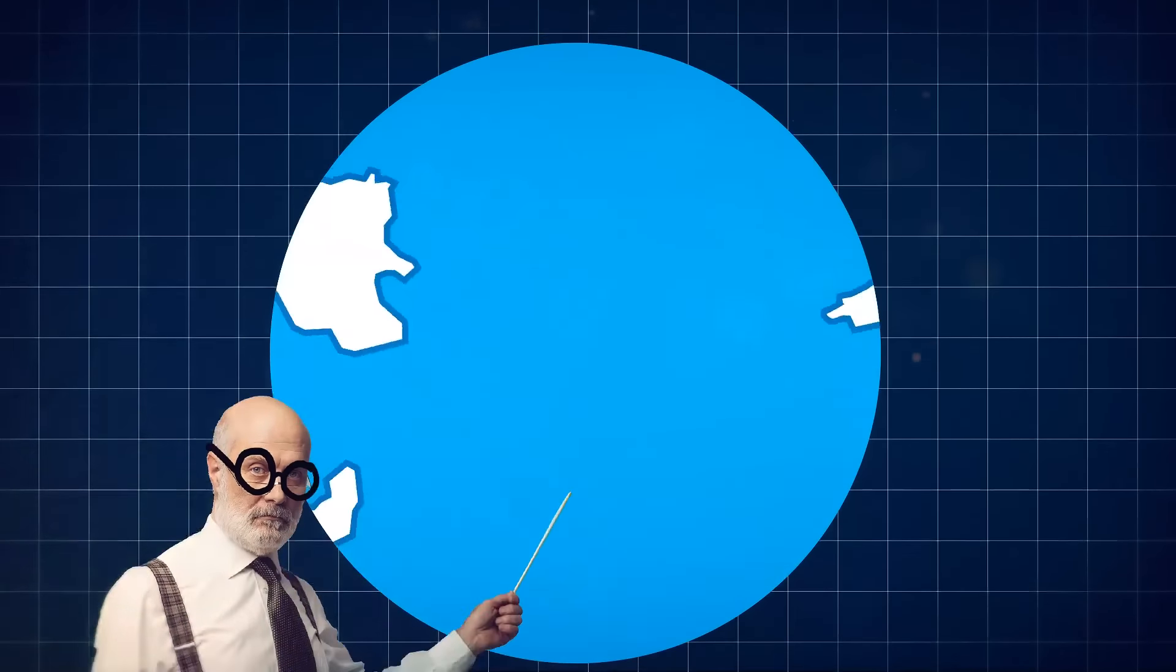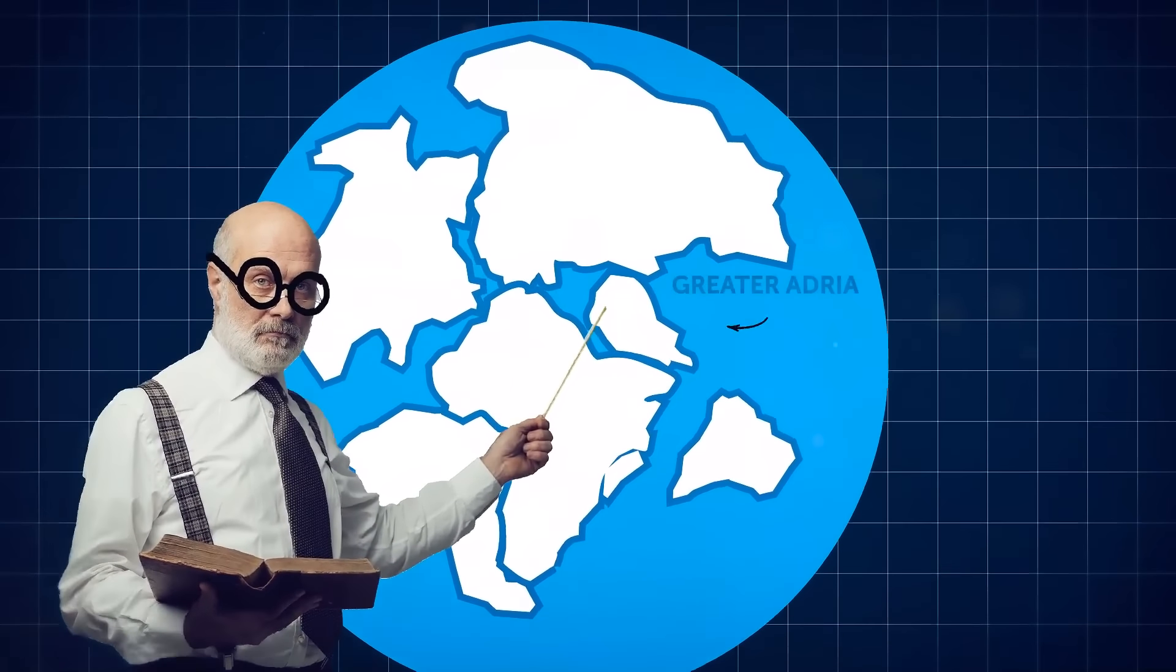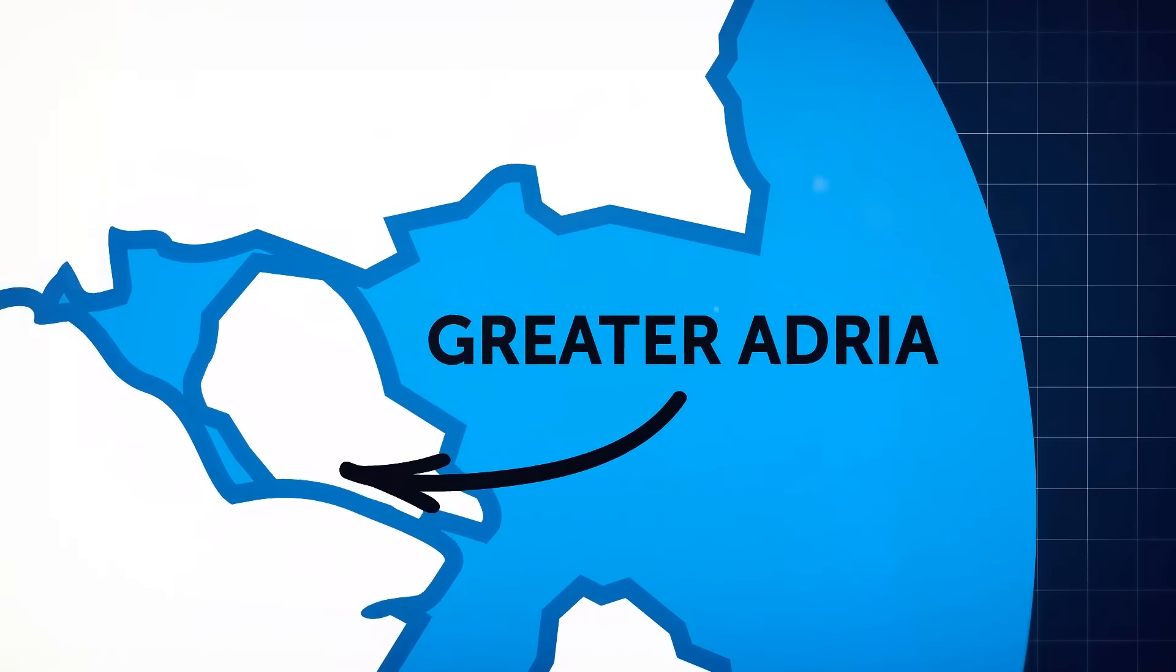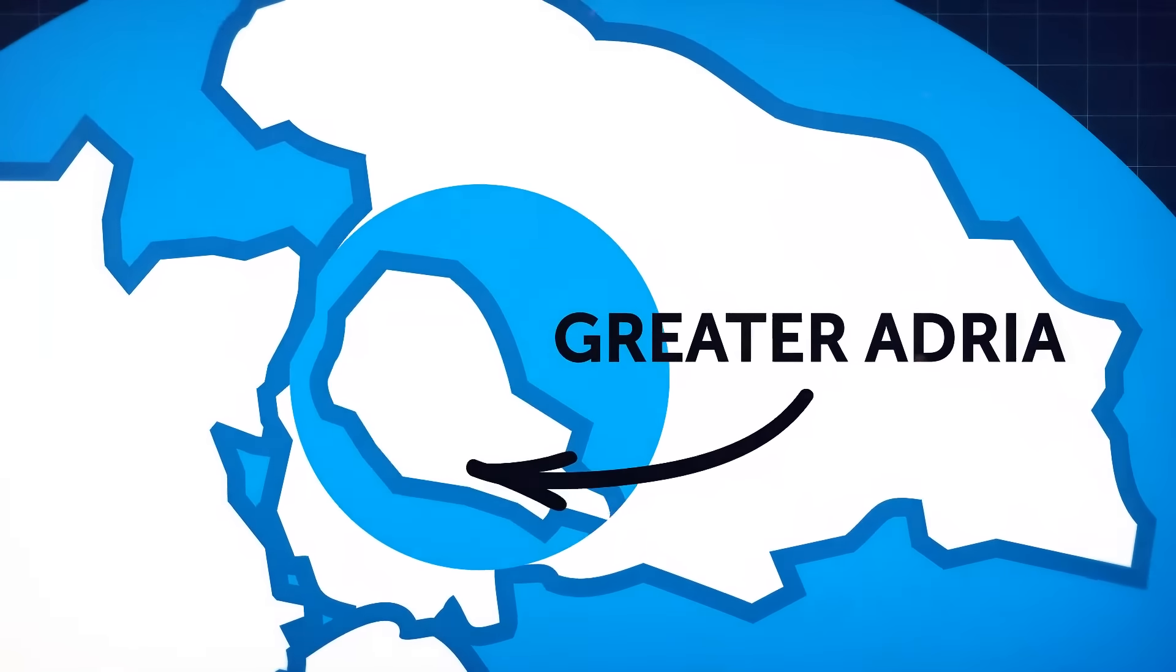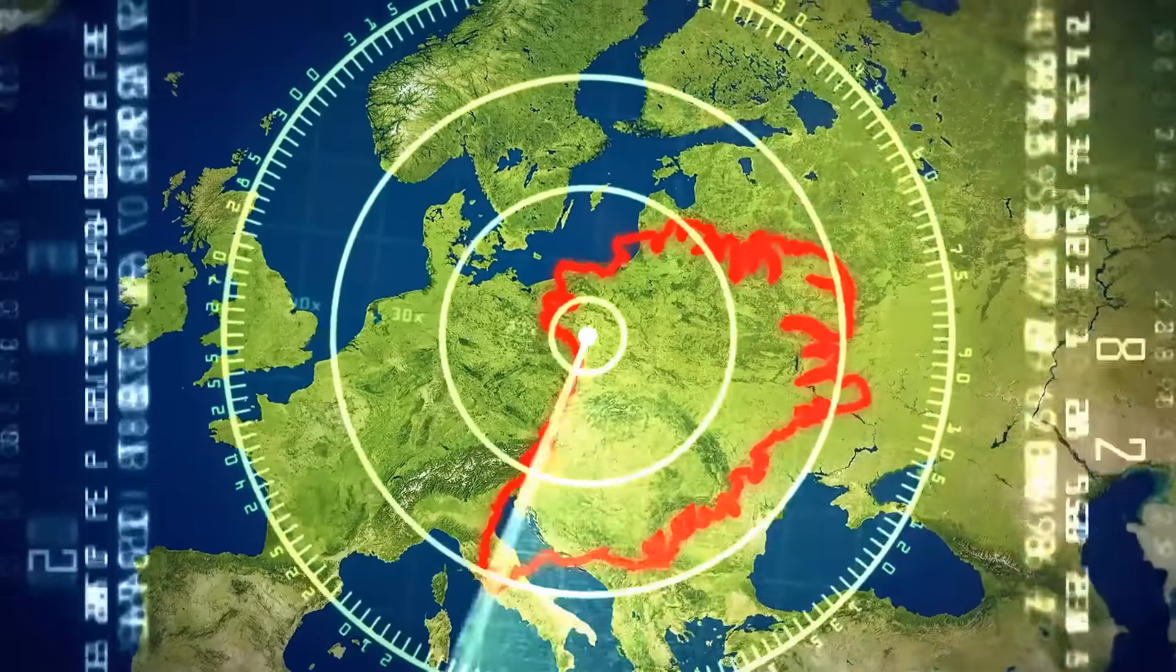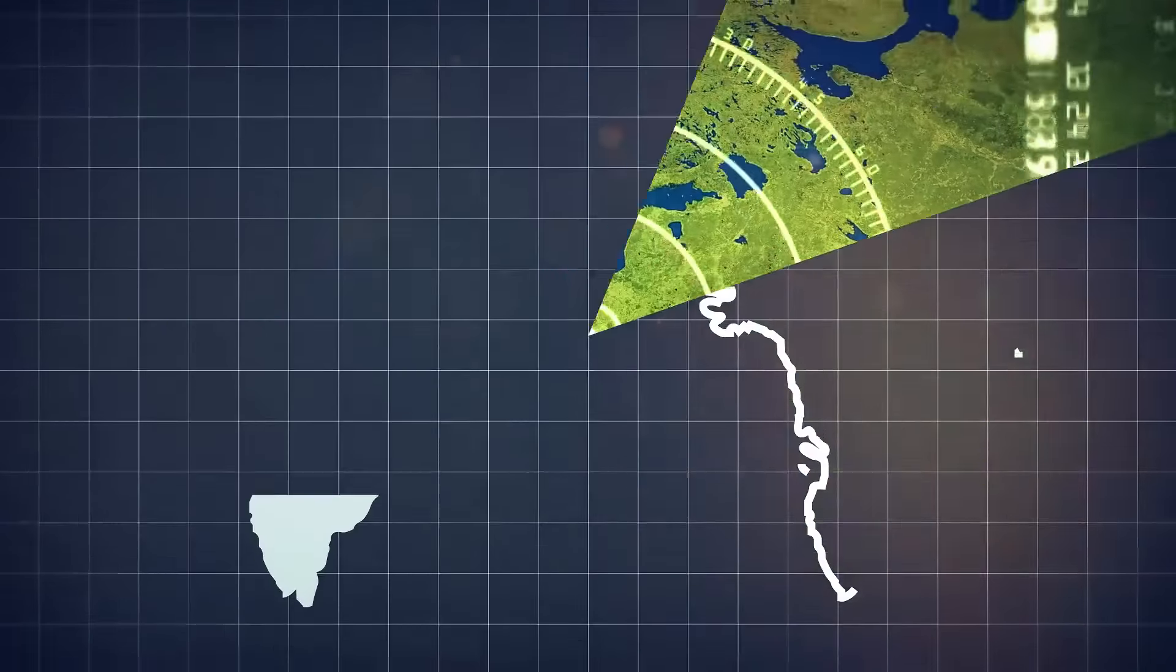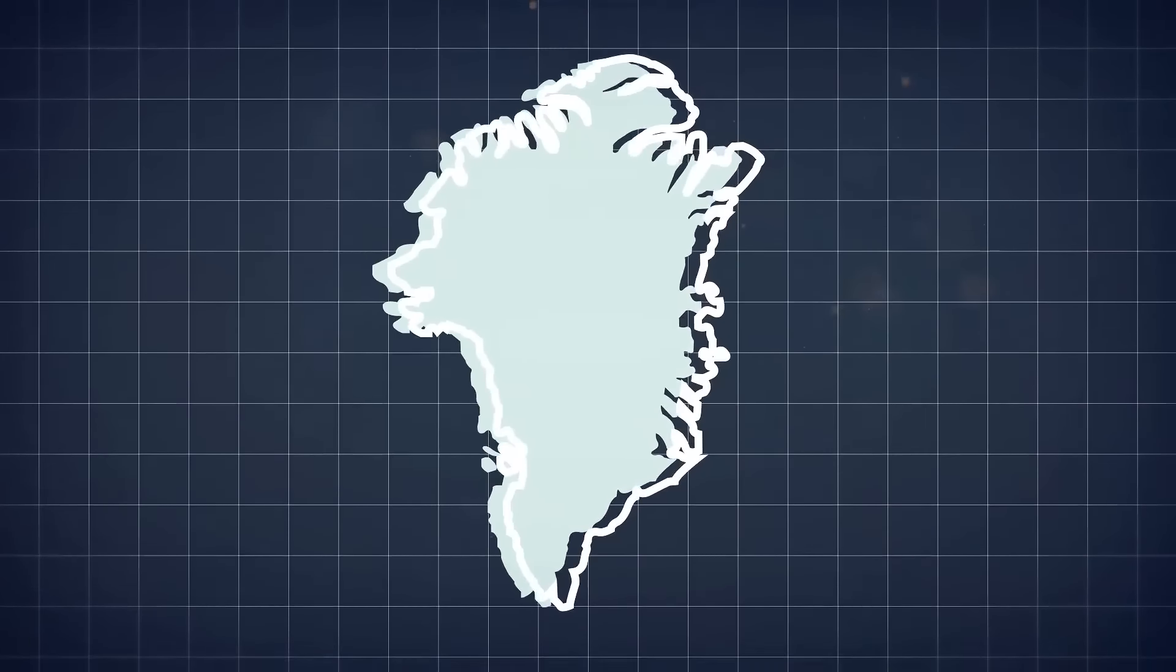Another lost and found continent isn't hiding in the ocean, but under Europe. It's called the Greater Adria, and it collided with Europe and started to sink under it around 140 million years ago. Today, it lies beneath Italy, Greece, and the Baltics. Its size and even shape matched that of Greenland, the world's largest island.